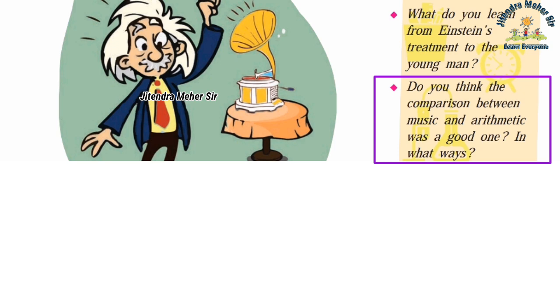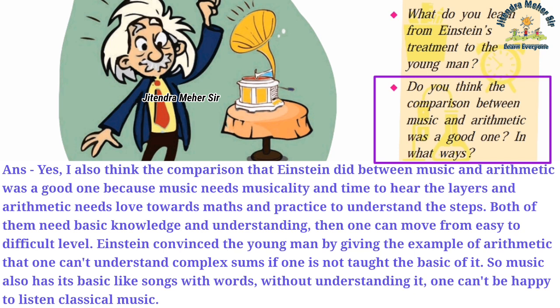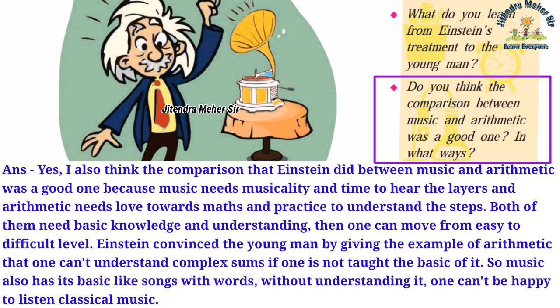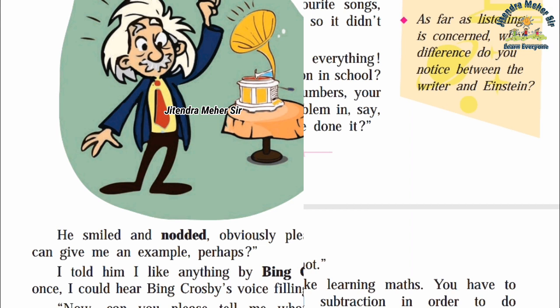Question four: Do you think the comparison between music and arithmetic was a good one? Answer: Yes, the comparison Einstein made between music and arithmetic was a good one because music needs musicality and time to hear the layers of mathematics. Arithmetic needs love towards maths and practice to understand the steps. Both need basic knowledge and understanding, then one can move from easy to difficult level. Einstein convinced the young man that one can't understand complex sums without learning the basics — similarly, music has its basics like songs with words.